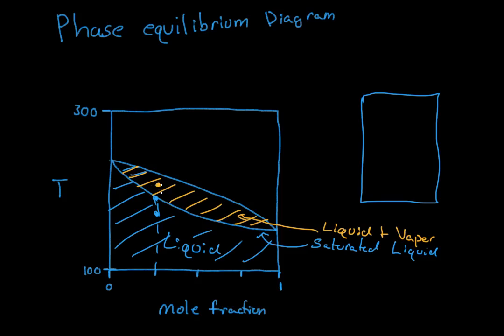But if you continue up and you get to this little line right here, so you get right here, you're at this saturated vapor. And that means that it's almost completely vapor. It's all vapor, except maybe a very, very small, like .00001% is liquid.